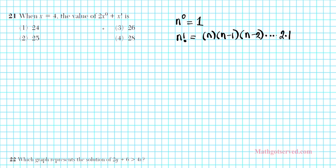So we're going to apply these two formulas to the simplification of this problem. In the expression 2x to the 0th power plus x factorial, we're simply going to evaluate this expression by substituting 4 into x in this position and in this position. So let's make the substitution. This expression now becomes 2 times 4 to the 0th power plus 4 factorial.